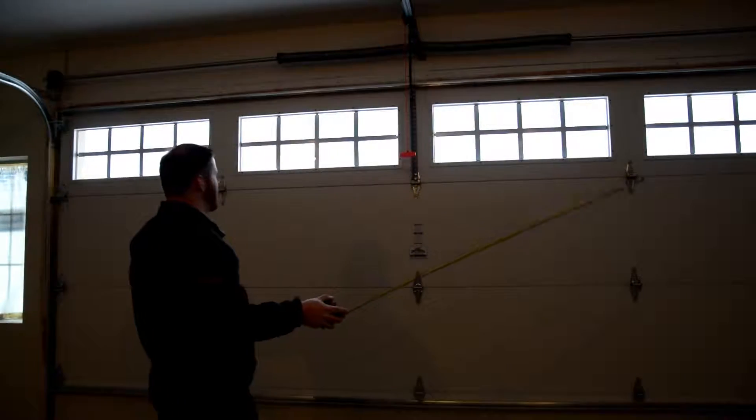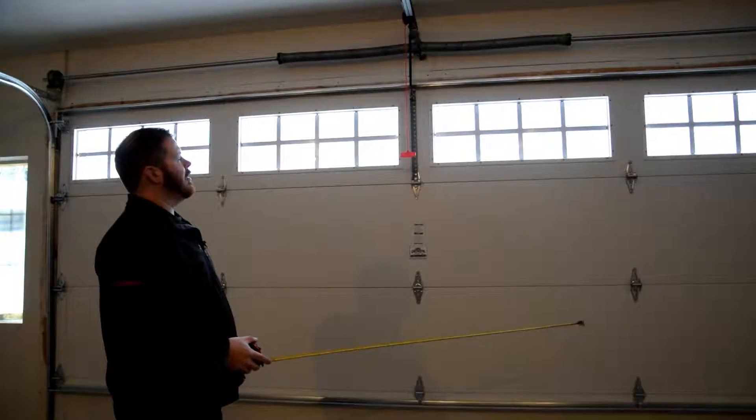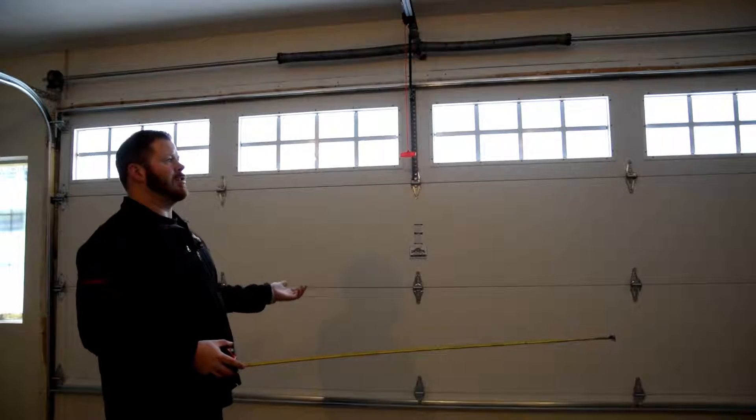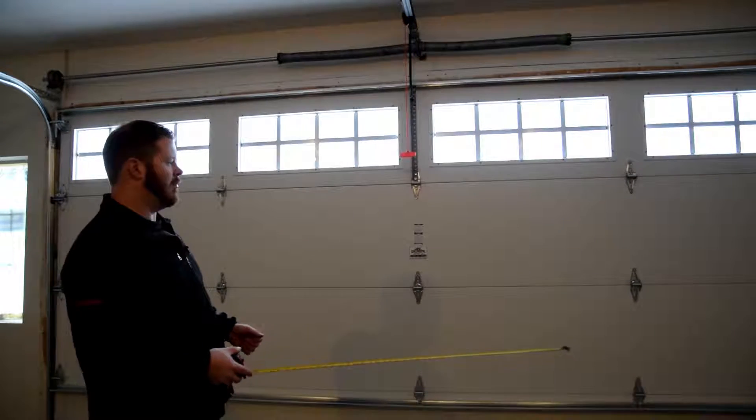This is a 16x8 two-car garage. On a smaller door, you'll notice that you might have one spring or two springs, but one spring doesn't mean it's missing one. It could just be a lighter door.